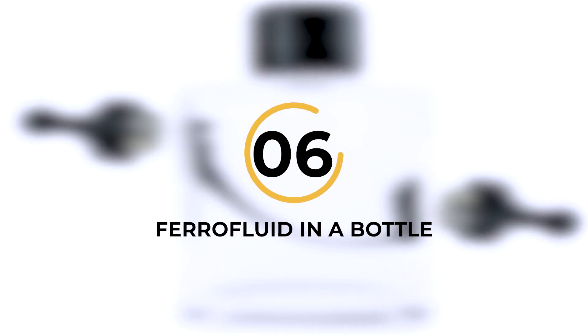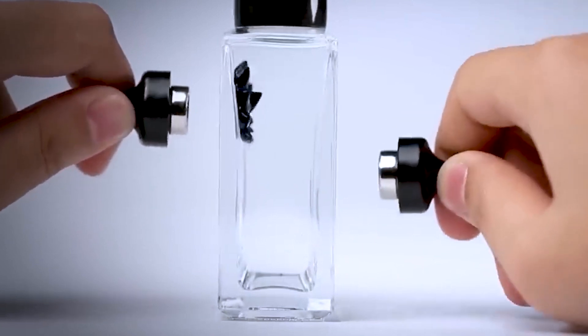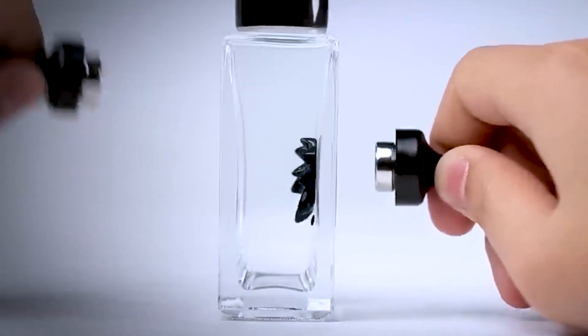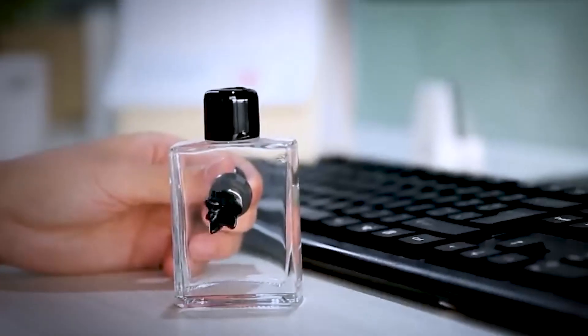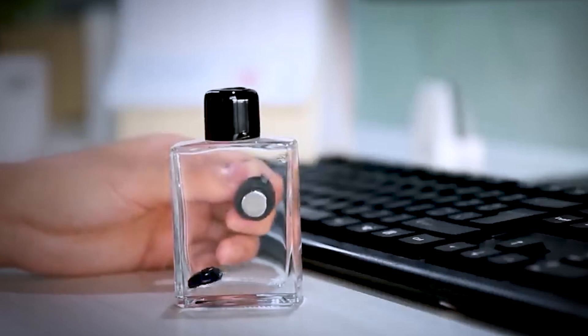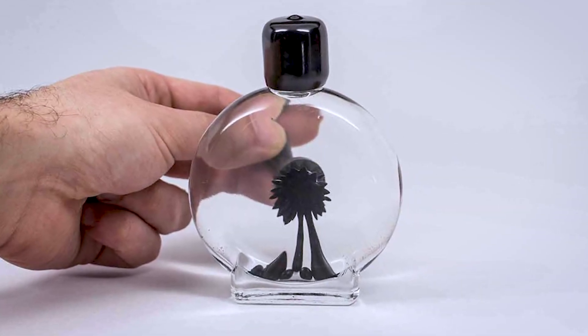Number 6. Ferrofluid in a Bottle. You've probably heard of magnets, but have you ever seen a liquid that reacts to them? Meet Ferrofluid, an incredible liquid that's attracted to magnets. This gadget contains a small amount of Ferrofluid in a bottle, allowing you to interact with it. It's like having a mini-creature in a bottle that follows your commands.